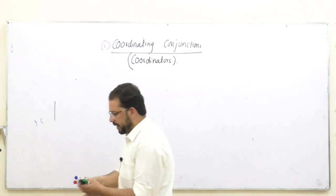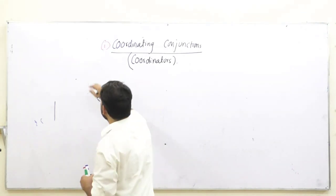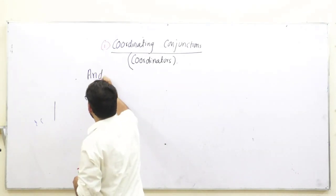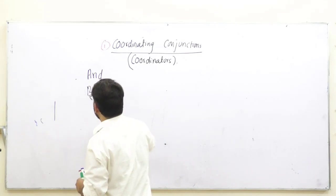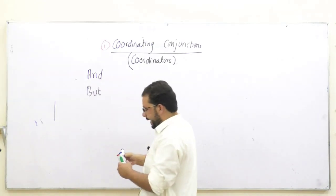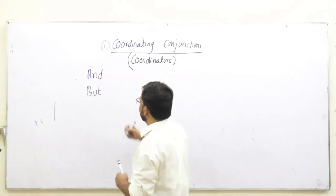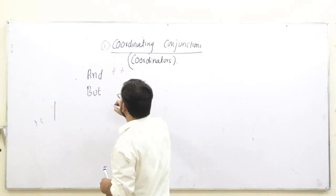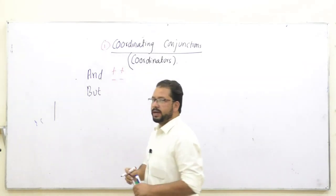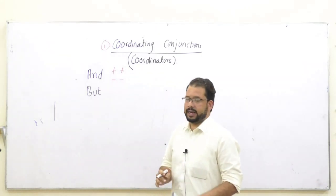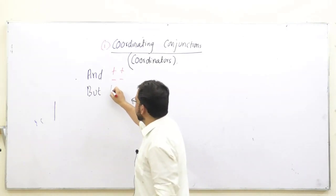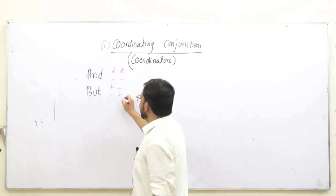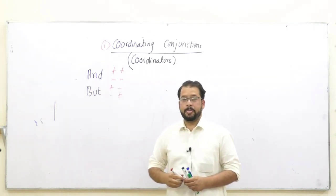Ab hum hare coordinating conjunction ko ek ek karke discuss karte hain ke hum isko kahan par use karte hain aur kahan par hum isko use nahi kar sakte hain. To sabse pehle hum baat karte hain 'and' aur 'but' ki. Ab 'and' ko hum use karte hain positive-positive ke liye ya negative-negative ke liye, jabke 'but' ko hum use karte hain positive-negative ke liye ya negative-positive ke liye.